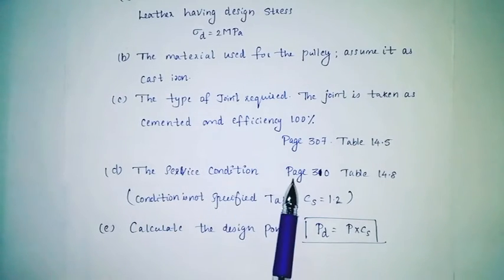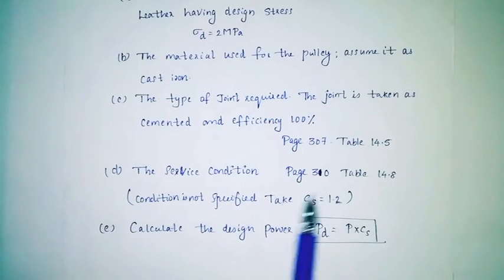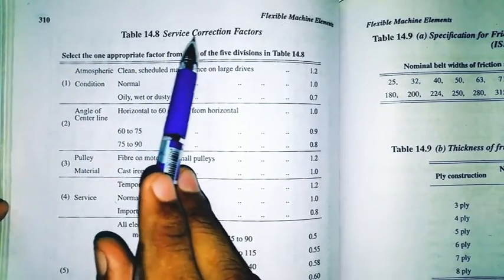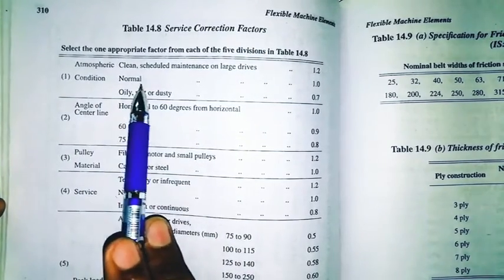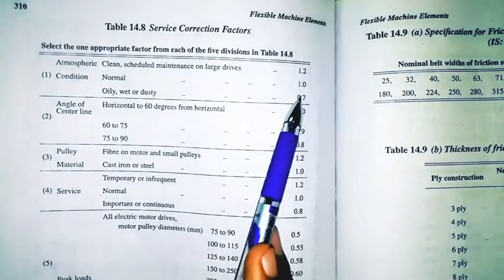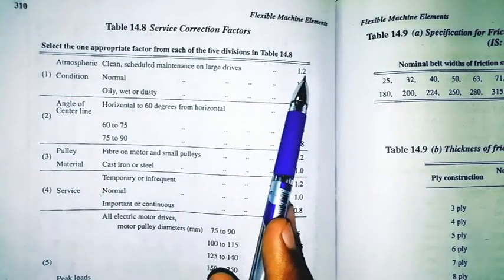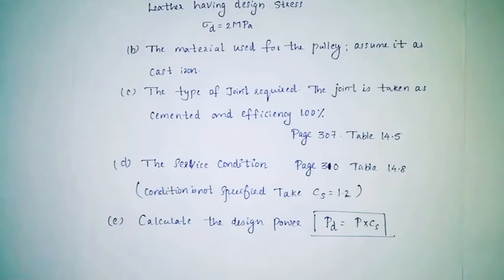Now the service condition is on page 310, Table 14.8. Condition is not specified — assume 1.2. This is the service correction factor on page 310, Table 14.8. Condition: 1.7; clean: 1.2.